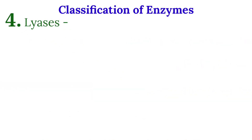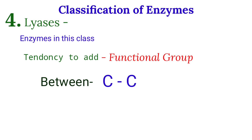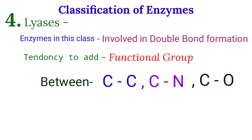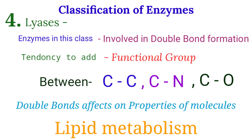The fourth class is lyases. Enzymes in this class add certain groups across carbon-carbon, carbon-nitrogen, or carbon-oxygen bonds, and are responsible for the creation of double bonds between these atoms. The creation of a double bond certainly affects the properties of that molecule. We will discuss these enzymes in the lipid metabolism section.